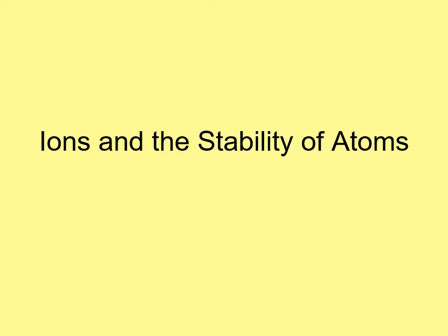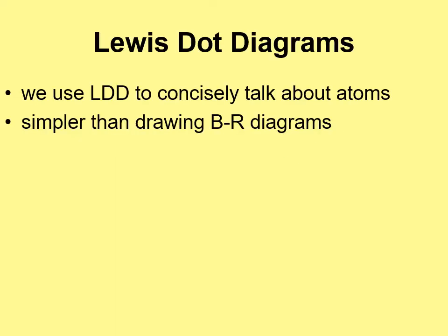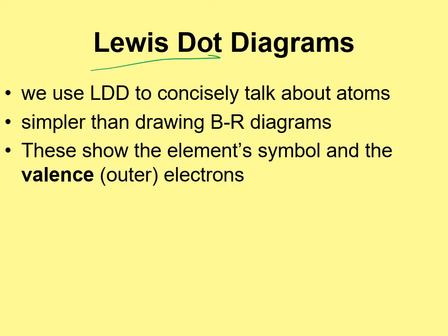We're going to look at how we can talk about atoms with Lewis dot diagrams, look at what ions are, different types of ions, and why atoms form these ions. A Lewis dot diagram is a tool we use to quickly and concisely refer to atoms. It's a simplified version of a Bohr-Rutherford diagram. Chemistry happens with the outer electrons, so a Lewis dot diagram focuses just on the outer electrons, also known as the valence electrons.